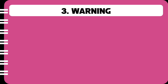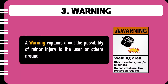Moving to the third one. A warning explains about the possibility of minor injury to the user or to others around the user. For example, the warning shown on the right-hand side has an orange colour coding and it talks about the welding area and the possible risk of eye injury or blindness, telling you not to watch the arc.